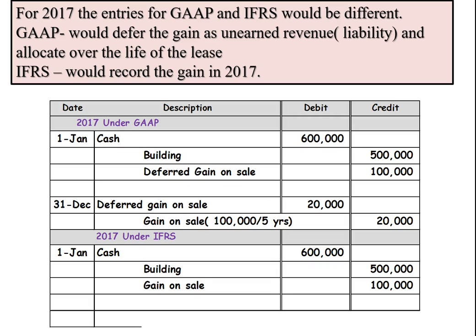Under the international standard for 2017, we would record the cash, take the building off the books, but recognize the whole gain of $100,000 in that year. So already, at the end of the first year, we have a difference of $80,000 that is being recognized under the international standard as gain, but not under GAAP.